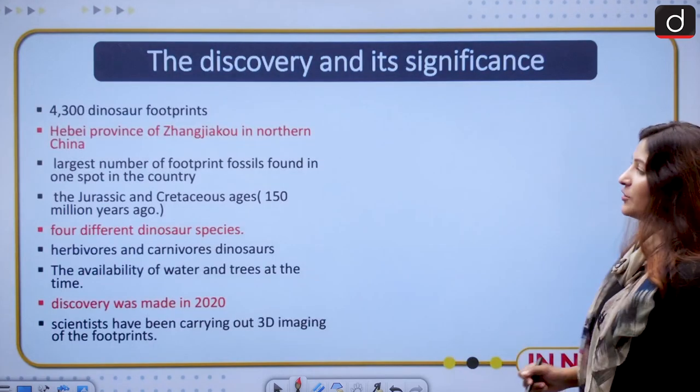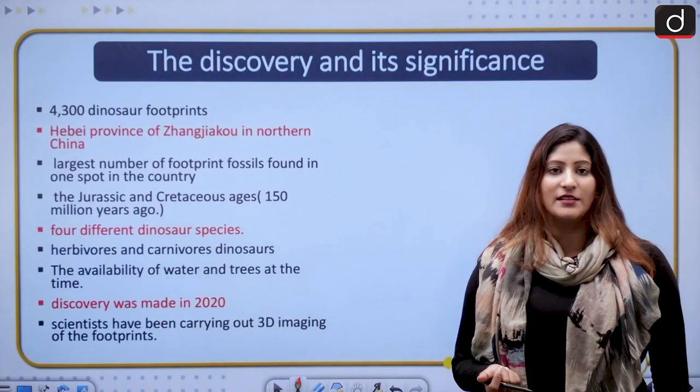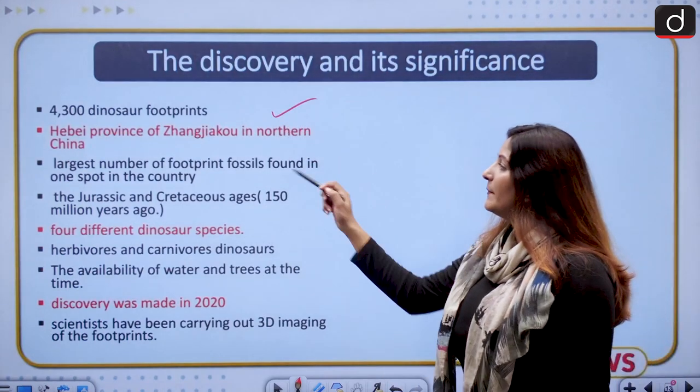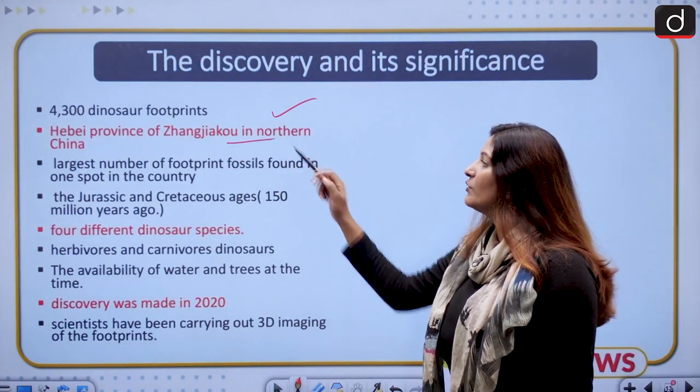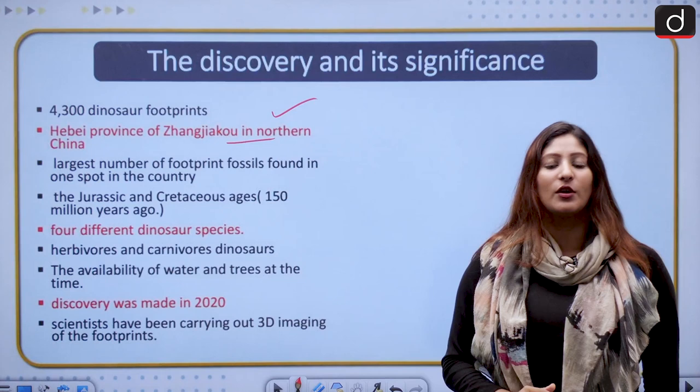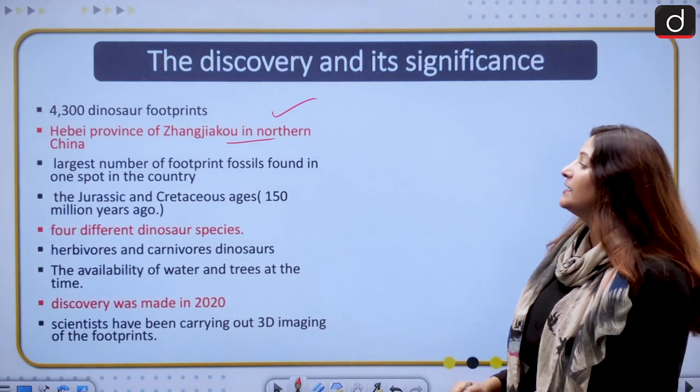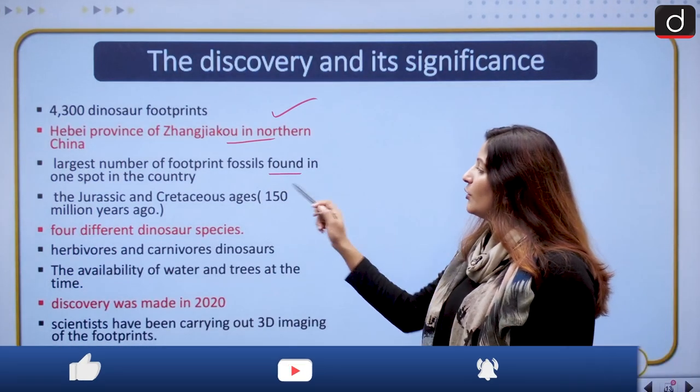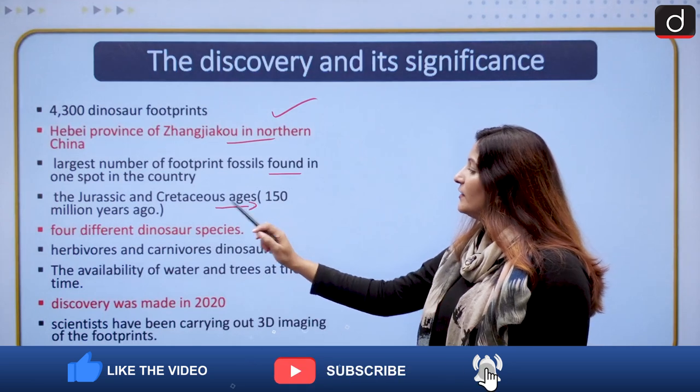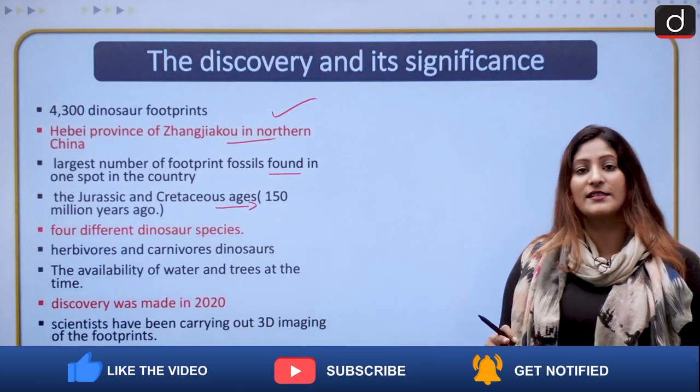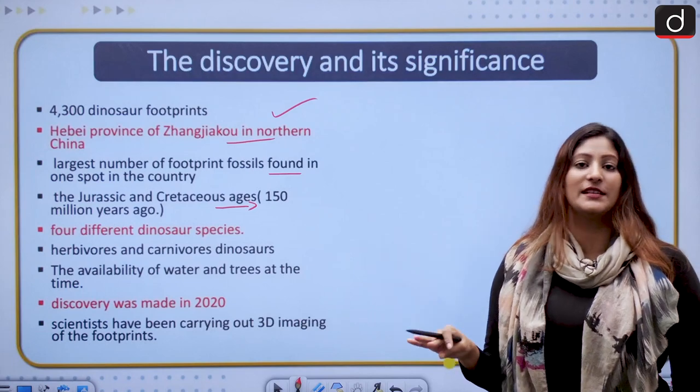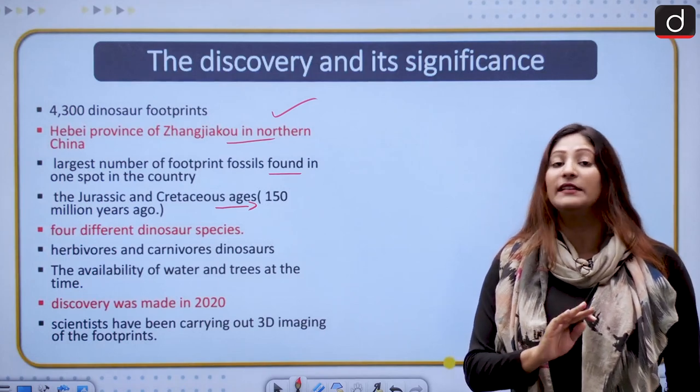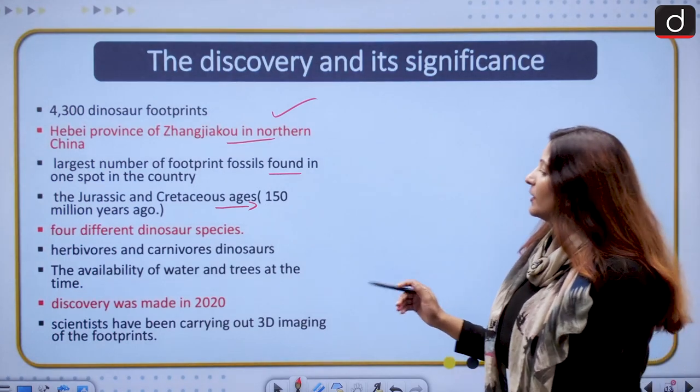Let's talk about the discovery in China. 4,300 dinosaur footprints have been discovered in Hebei province of Zhangjiakou in northern China. According to the South China Morning Post, it is the largest number of footprint fossils found at once in the country. They belong to Jurassic and Cretaceous ages, and four different species have been found. One species among these four was never discovered before.